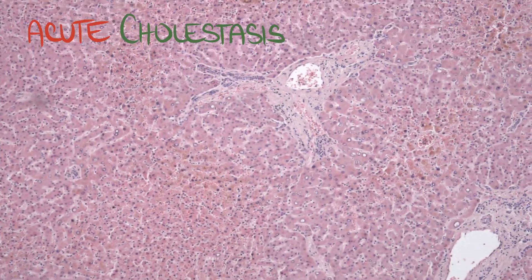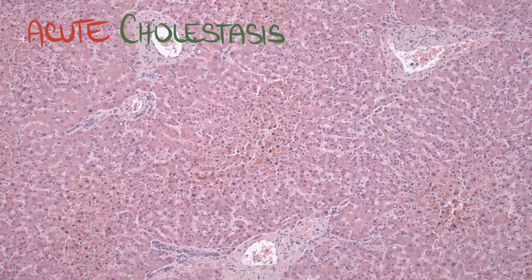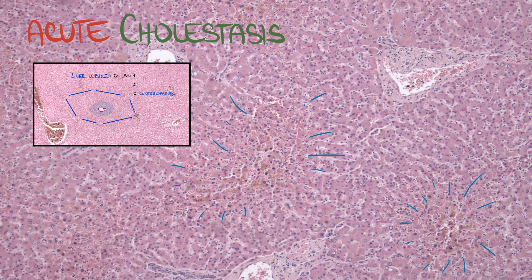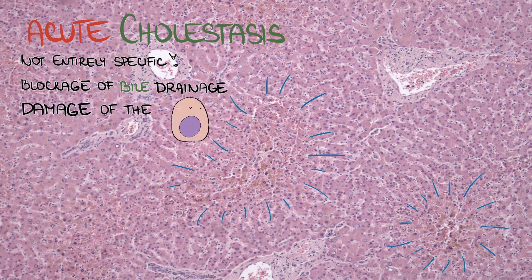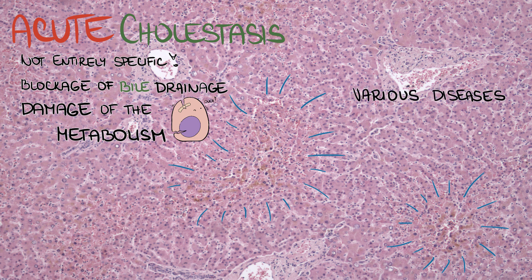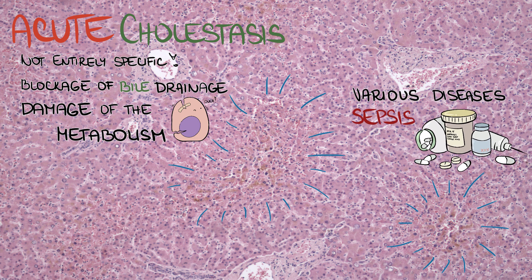In an acute phase, the stagnant bile is localized predominantly in the central lobular region of the liver lobule. This finding is not entirely specific for disorders of the biliary tree, since it may be caused not only by blockage of the bile drainage, but also by damage of the hepatocyte metabolism. Acute cholestasis may therefore accompany various diseases, especially drug-induced liver damage or sepsis.